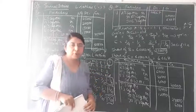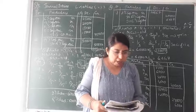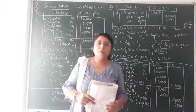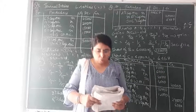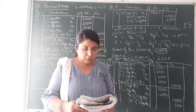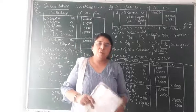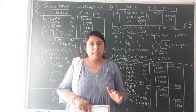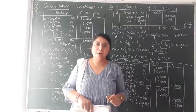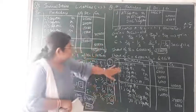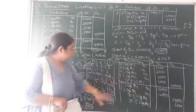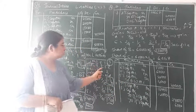Now moving on to the next and last sum for today — question number 5. B, R, T and S are partners sharing profit and loss in the ratio of 4:3:1:2. Out of these four partners, B is retiring. Goodwill is appearing in the books at Rs. 20,000, and at the time of B's retirement goodwill is valued at Rs. 60,000. So both the old and new goodwill values are given.